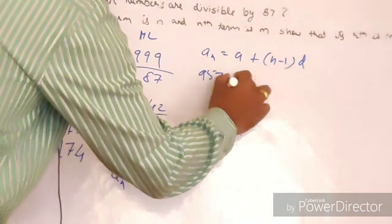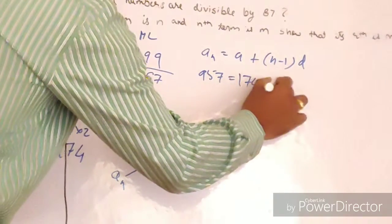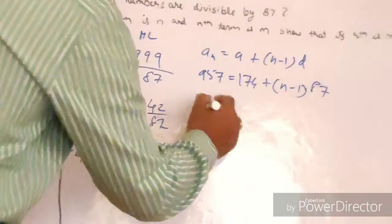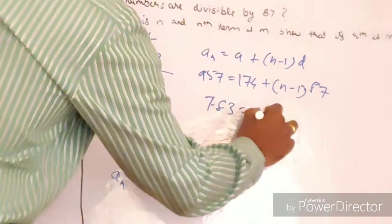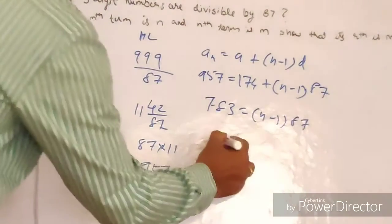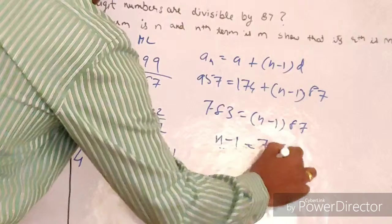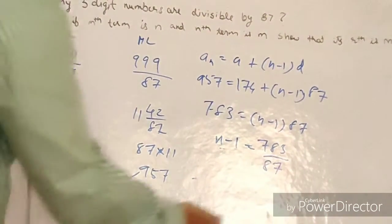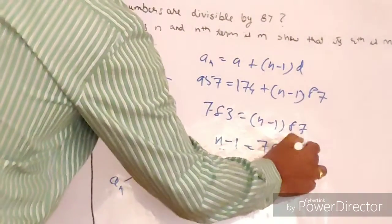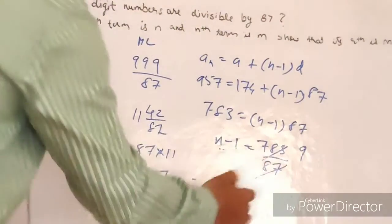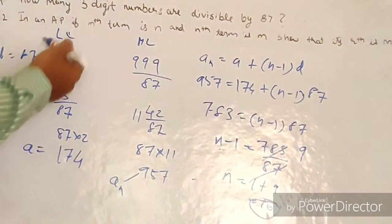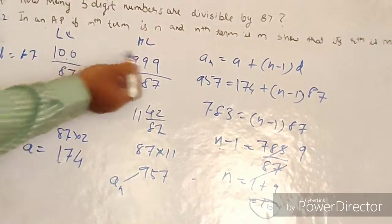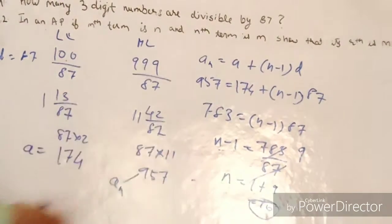Substituting the values: 957 = 174 + (n − 1) × 87. Transposing 174: 957 − 174 = 783 = (n − 1) × 87. Dividing both sides by 87: n − 1 = 9, so n = 10. Therefore, there are 10 three-digit numbers between 100 and 999 that are divisible by 87.